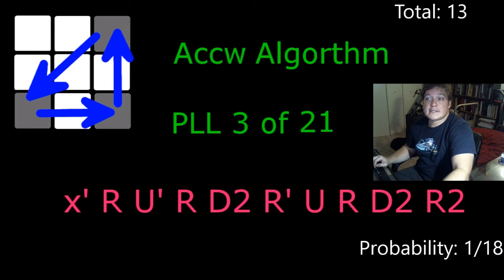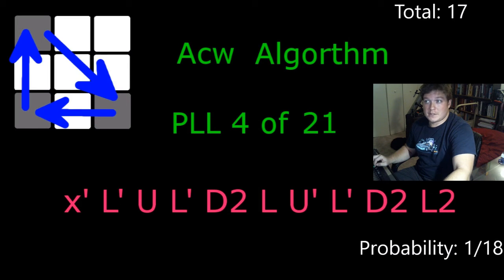The ACCW algorithm, same thing. One corner can be solved but there's four corners that could be solved. So there's four ways this can arise. Probability one 18th, 13 total cases.